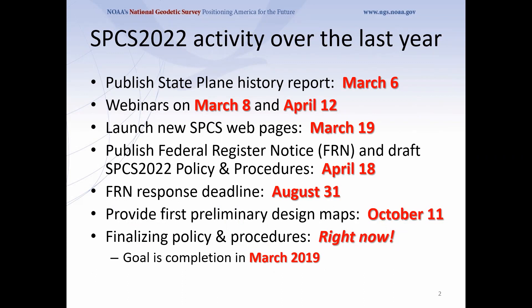On March 6th of last year we put out a report about the history and status of state plane and its future directions, then gave webinars on March 8th and April 12th. This year on March 7th we launched new state plane web pages on March 19th. We put together draft policy and procedures and published those along with a federal register notice on April 18th. People had till August 31st to give comments — Idaho was one of the states that responded. We started making preliminary design maps, with the first ones on October 11th, and we're in the process of finalizing the policy and procedures right now.